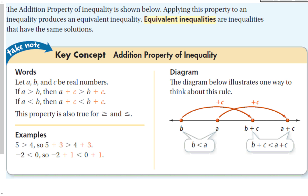When we look at the addition property of inequality, a, b, and c are going to be real numbers. If a is greater than b, then a plus c is greater than b plus c. Basically, all I did was add c to both sides, and I keep my expression the same. The same is true if we have a less than, or a greater than or equal to, or less than or equal to.